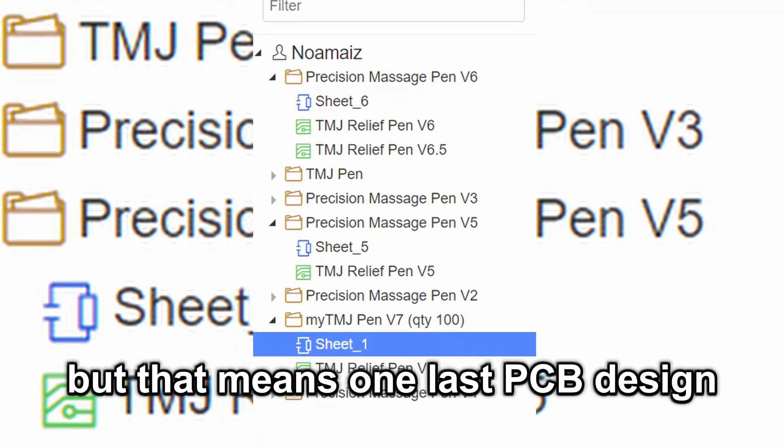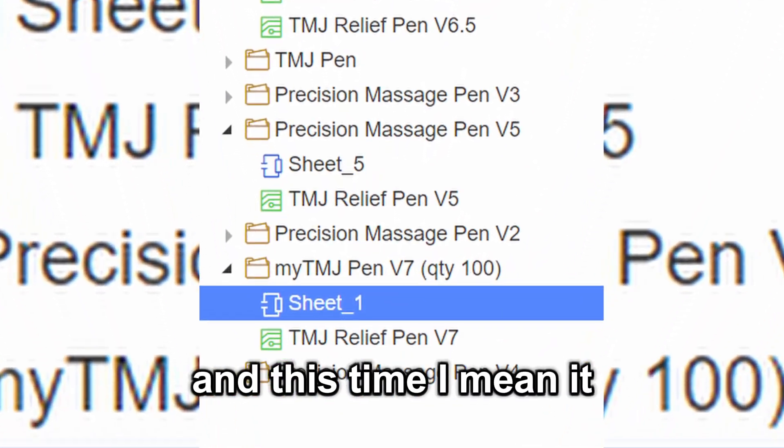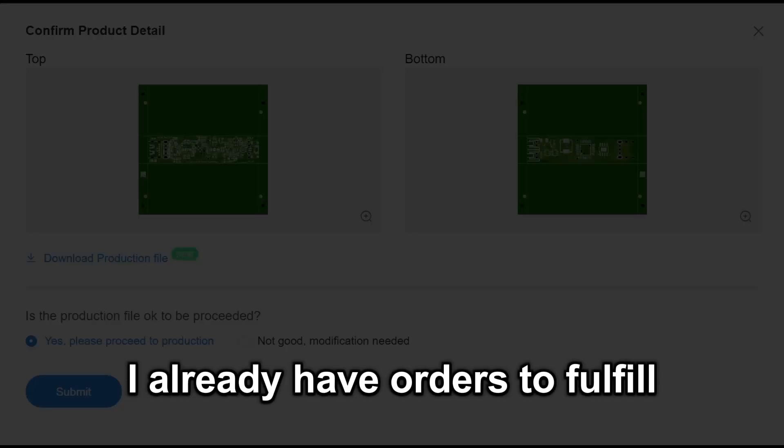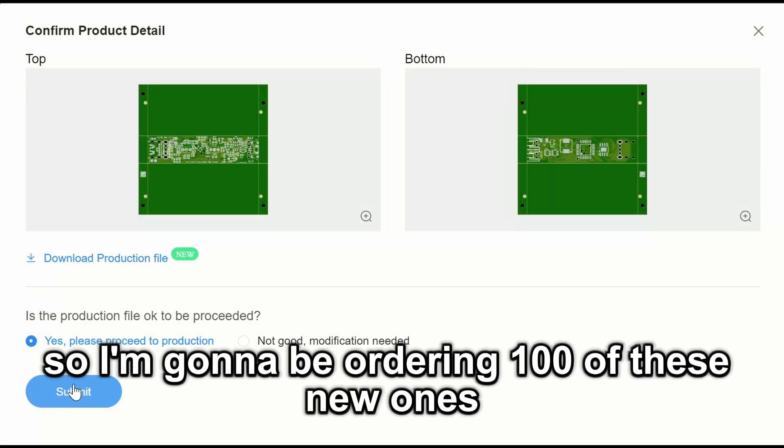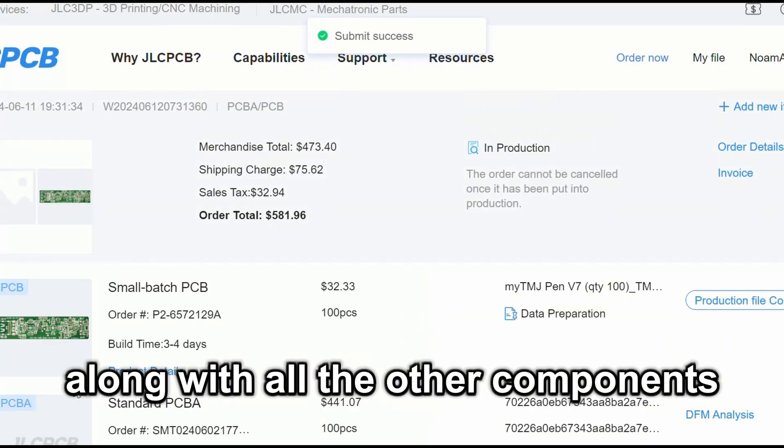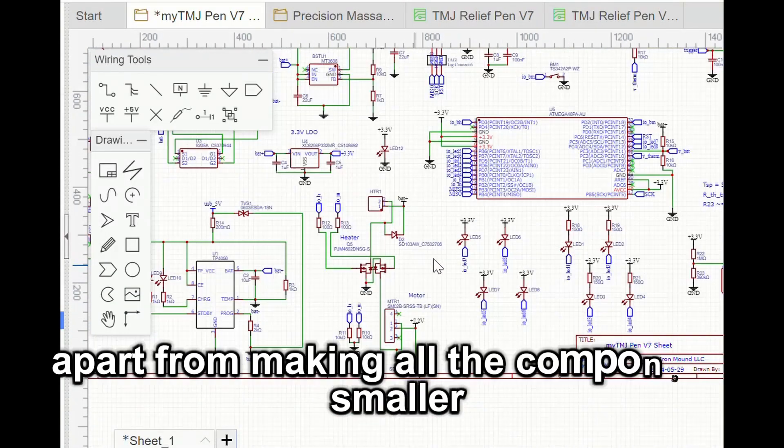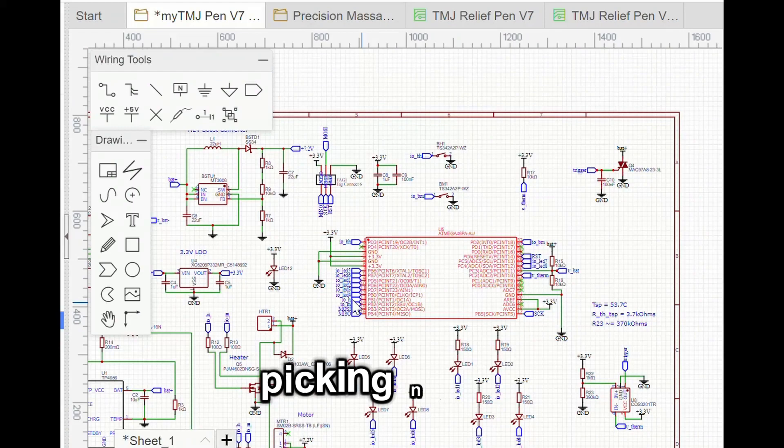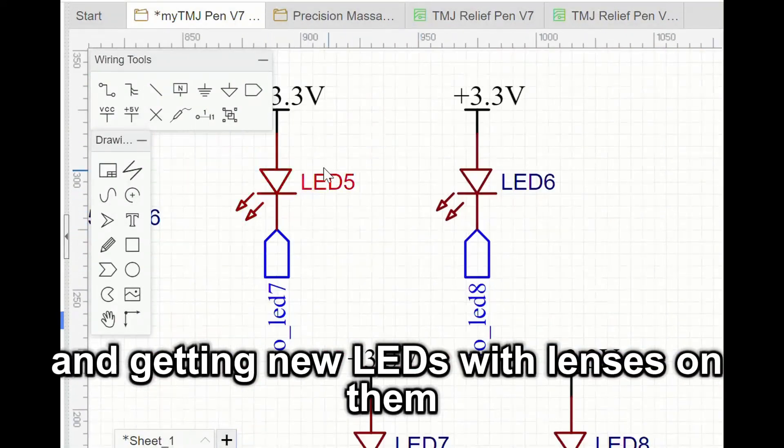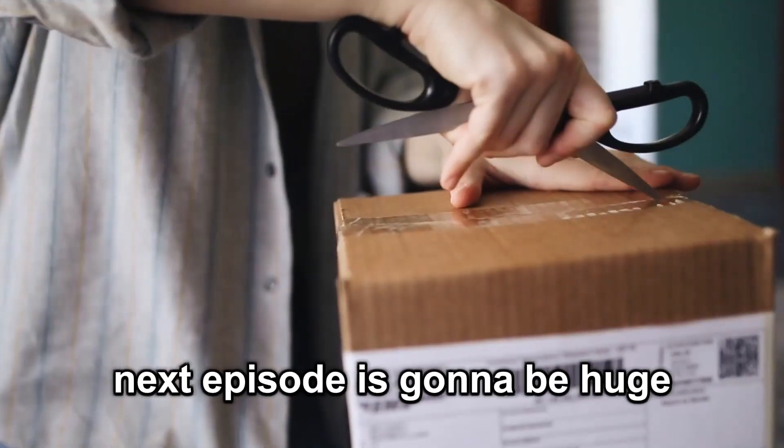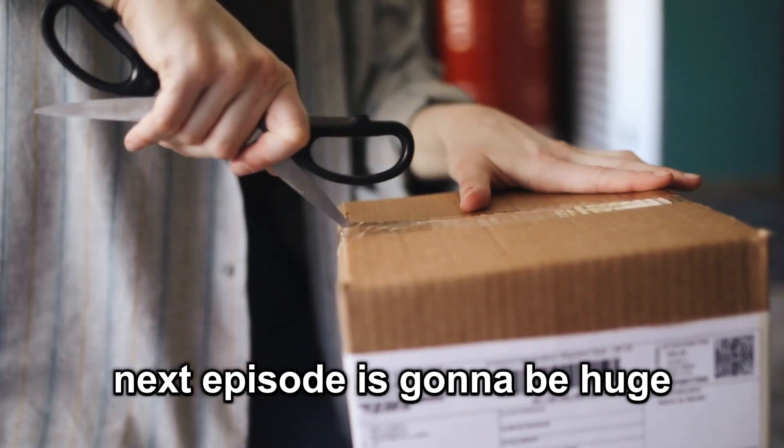Okay, for now, I'll use the old code, but that means one last PCB design, and this time I mean it! I already have orders to fulfill, so I'm gonna be ordering a hundred of these new ones along with all the other components I need to build full devices. I didn't change much apart from making all the components smaller, picking new pins, and getting new LEDs with lenses on them. Next episode is gonna be huge. See ya!